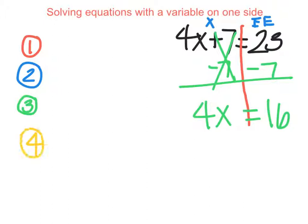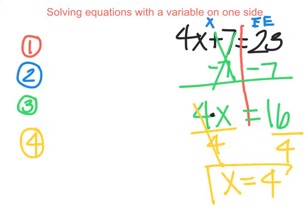Our fourth and final step is to get x by itself. Remember that when we have a number and a letter attached to each other — a coefficient and a variable — they're being multiplied. There's a multiplication symbol in the middle that we don't necessarily see, but it is there. To undo multiplication, the opposite is to divide, so we're going to divide by 4. Whatever we do on the left side, we also have to do on the right side. So on the right we divide by 4 as well. 4 divided by 4 cancels, and 4 over 4 is 1. So x equals 16 divided by 4, which is 4. That's my answer.